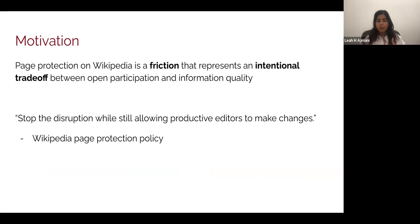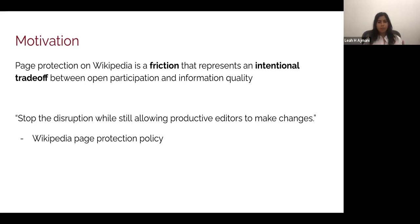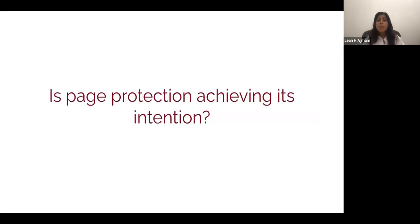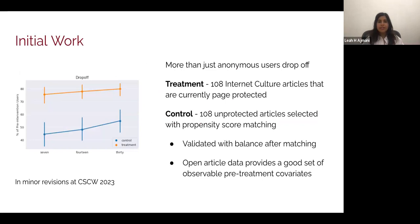Page protection on Wikipedia is specifically a friction because it requires users to gain certain credentials in order to edit a page. In theory, any user can gain these credentials with enough time and effort. Furthermore, it represents an intentional trade-off between open participation and information quality — two very big values in the Wikipedia community. This tension is made clear in the Wikipedia page protection policy, which talks about stopping disruption while still allowing productive editors to make changes. My work focuses on asking: is page protection achieving its intention?